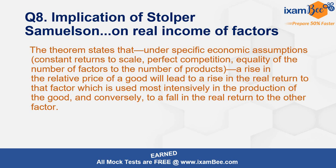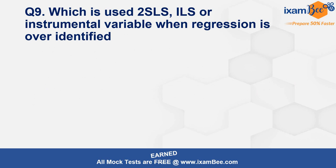The next question was on the implication of the Stolper-Samuelson theorem on real income of factors. Stolper-Samuelson tells you that as the relative price of a commodity rises, the real return to the factor most intensively used in the production of that good will also rise, and it will fall if the opposite happens.